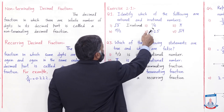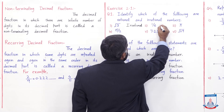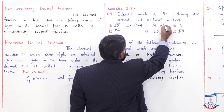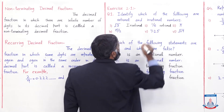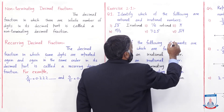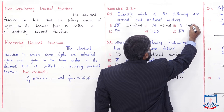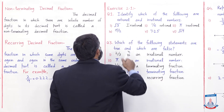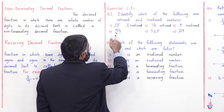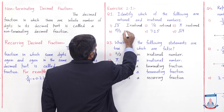1/6 کو دیکھیں — یہ p over q کی form میں ہے اور q, 0 کے equal نہیں، اس لیے یہ rational number ہوگا۔ π — جیسا کہ ہم نے شروع میں discuss کیا — irrational ہوتا ہے۔ پھر 15/2 بھی p over q کی form میں ہے، لہذا یہ rational number ہوگا۔